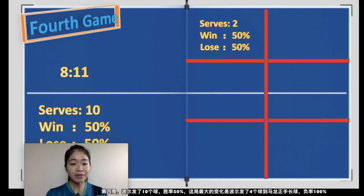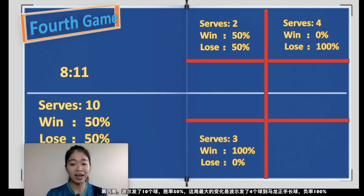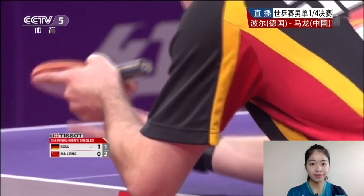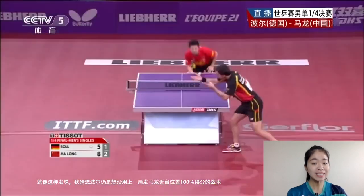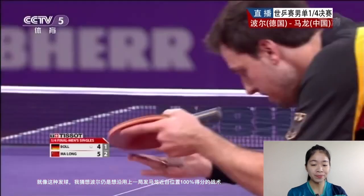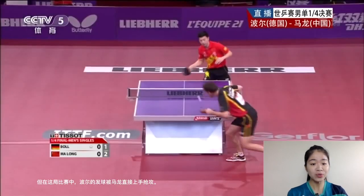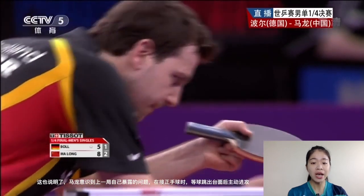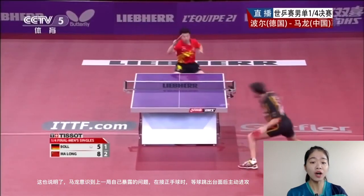In the fourth game, Timo served 10 balls and scored only 15% on his serve. The bigger difference was that he served four balls to Ma Long's forehand long area and lost 100% on those. Even when a ball is short but comes out past the end of the table after the first bounce, top players still count it as a long serve. Timo was trying to serve short like in the previous game, but in this game Ma Long realized the problem from before and changed strategy — waiting a little longer to read whether the ball came out of the table, then attacking.